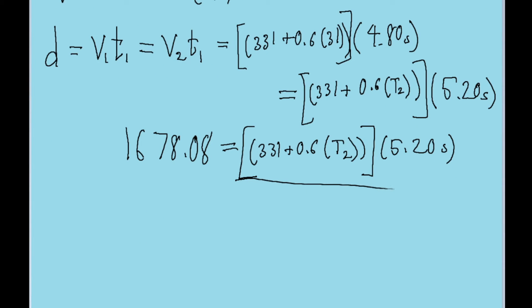Let's divide both sides by 5.20. Now we're getting simpler. We have 331 + 0.6T₂, so we can subtract 331 from both sides.